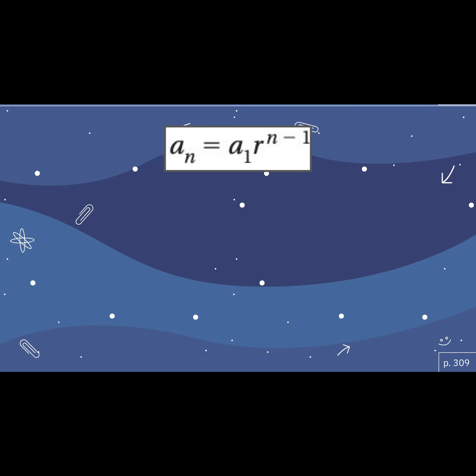For an arithmetic sequence, if we want to find the nth term, we learned that in the last chapter. For a geometric sequence, we are using the formula on the board. What does this kind of look like? It looks like something we've seen before — it looks like our exponential equation.